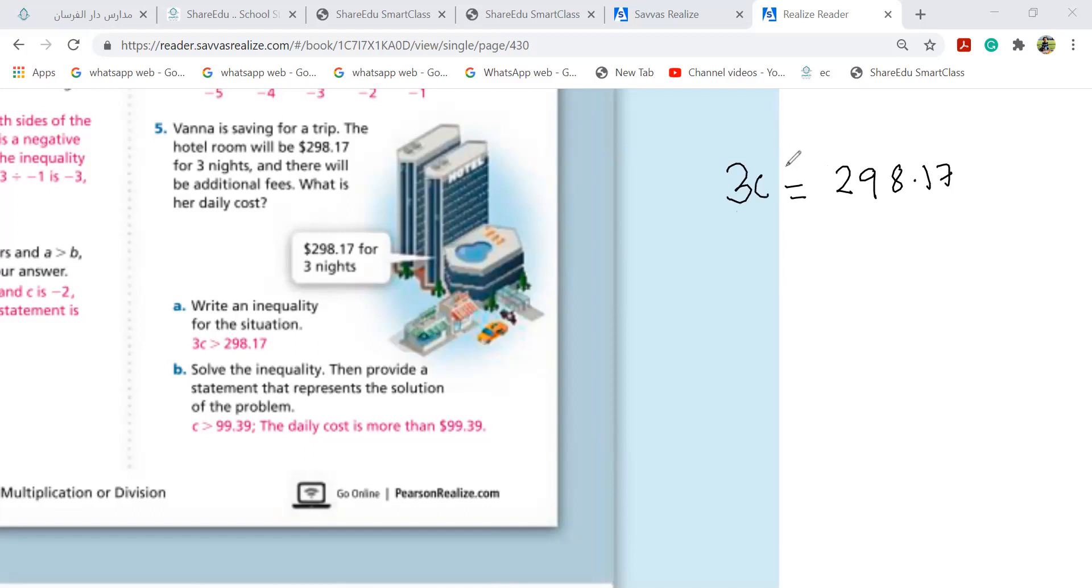3C has to be greater than this. So this is the equation. Now, Noor, can you solve this with me? C greater than, not equal to, C greater than. I'll write the number, 298.217. Where will this three go? This is multiplication. What will it become?